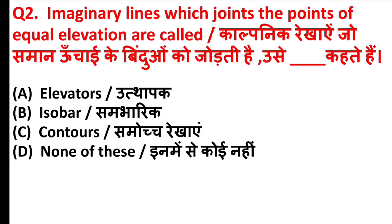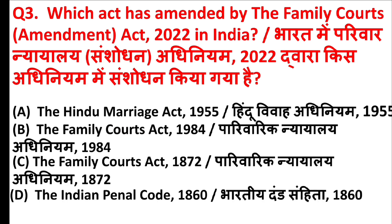Imaginary lines which join the points of equal elevation are called contours. The right answer is option C.